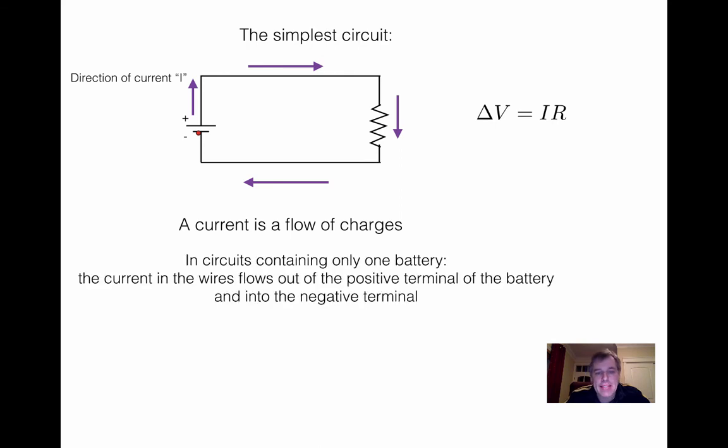What is a current? Physically, a current is the flow of charges. You have charges, if you have a bunch of charges moving, you have a current by definition. In this simple circuit like this, the current will always come out of the positive terminal and flow into the negative terminal, so like this. That's the direction of the current for this circuit. In the wires, it goes away from the positive terminal and it enters the negative terminal of the battery. In this case, if you have a circuit where there's only one battery, you always have the current flowing out of the positive terminal and into the negative terminal.